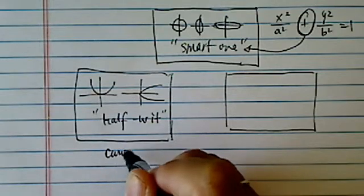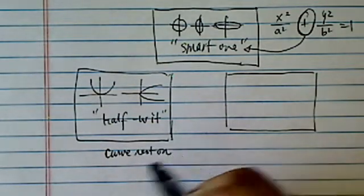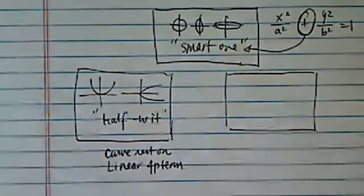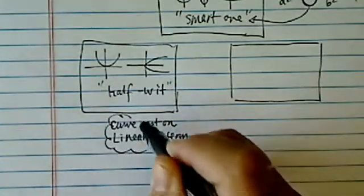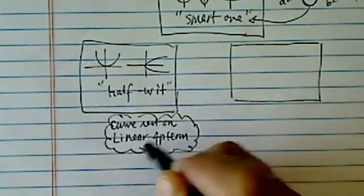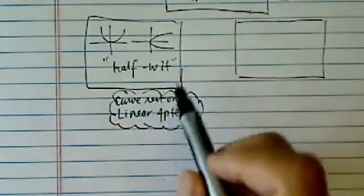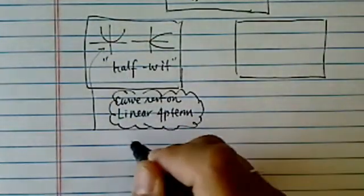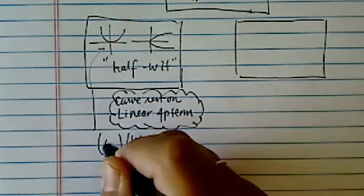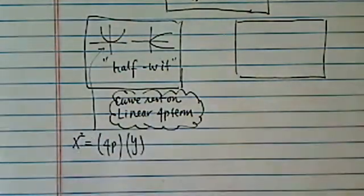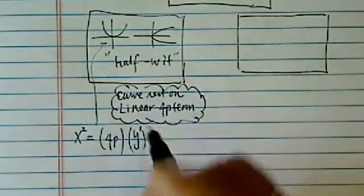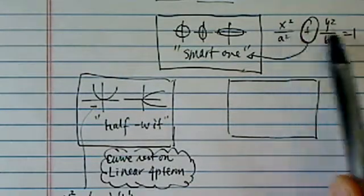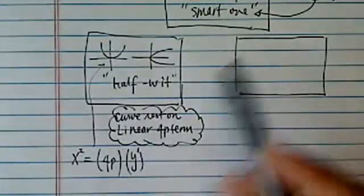The curve rests on linear 4P term. I'll explain what it means by that. Now if you remember this one, it's a half-wit and a curve, it's rested on the linear 4P term. So for example, take this first graph. The curve is on y, so you put a linear term here, and you put a 4P in front of it, and what's left is x squared. There's only one linear term and one square term, unlike our smart ones, which is x squared and y squared with a plus sign.